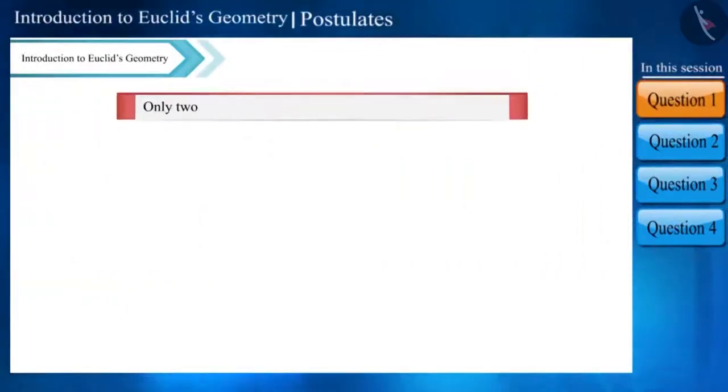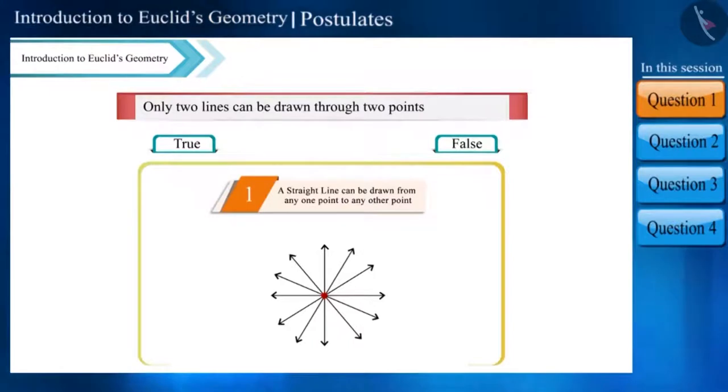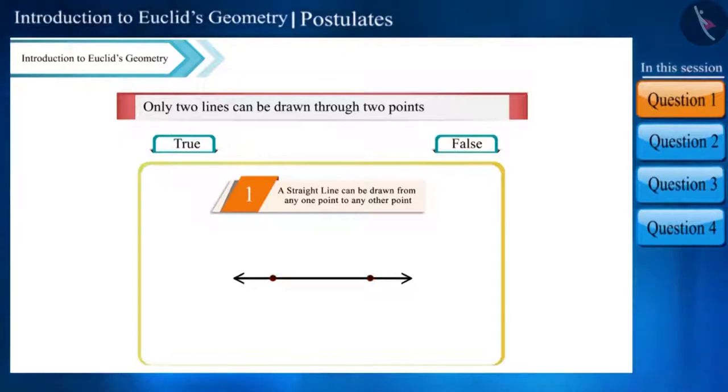Only two lines can be drawn through two points. Friends, is this statement true? In the previous video we saw that infinite lines can be drawn through one point and only one line can be drawn through two points.